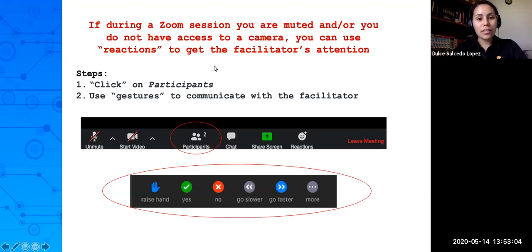How do you find these reactions? Simply click on participants. When you click on participants, this will show. These are the reactions you can use to communicate with your professor.